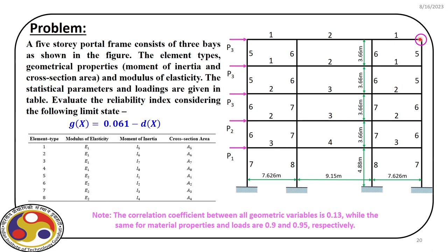The structure will be analysed in ANSYS. Once we do a static analysis, we will get the solution, and from that we extract the response at the top right corner. We use that to investigate whether G(x) is less than, equal to, or greater than zero, and use that information to solve the first order reliability problem — our main task is to evaluate the reliability index and corresponding probability of failure.